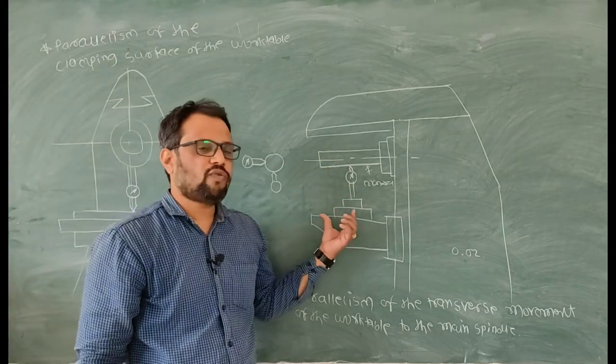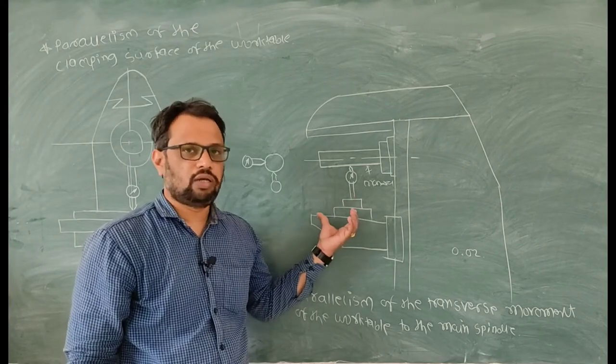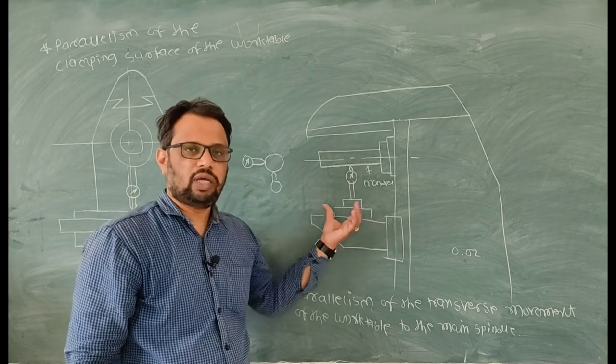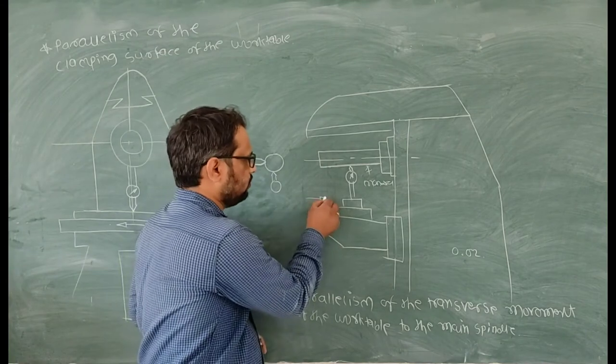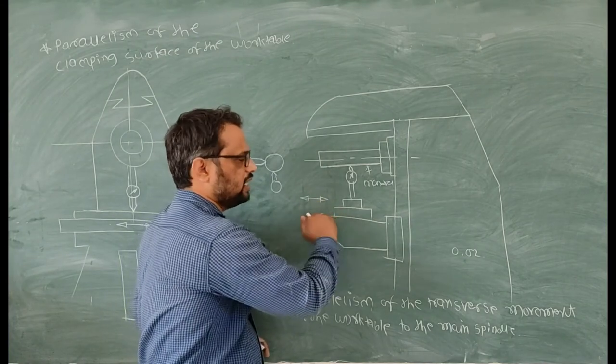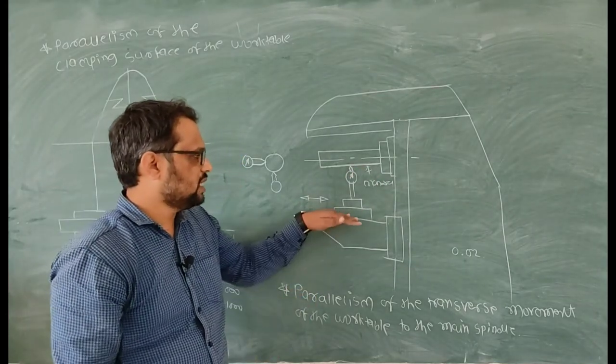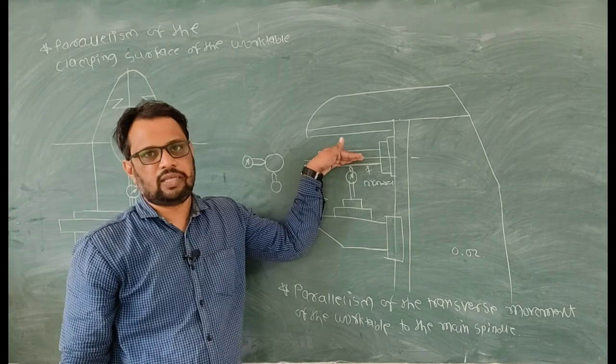Now first of all I have to adjust my table to the mean position, its total travel in mean position. Then I move this table in this direction and I will check parallelism of this clamping surface with my axis.